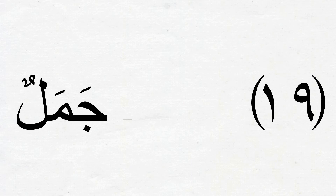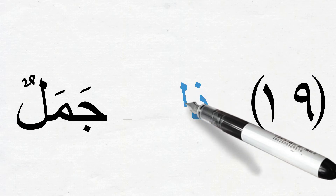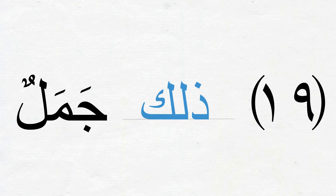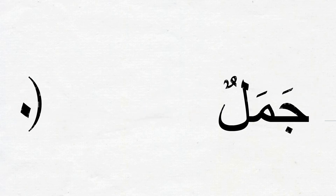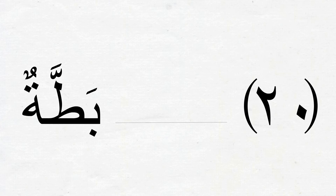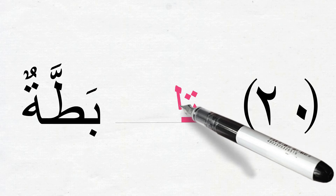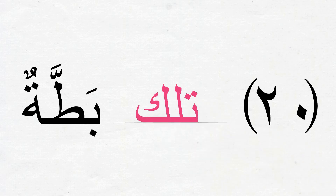Number 19: جَمَلٌ means 'a camel', مُذَكَّر, so we will say ذَٰلِكَ جَمَلٌ — that is a camel. And finally, number 20: بَطَّةٌ means 'a duck'; بَطَّةٌ is مُؤَنَّث because of the تاء مربوطة, so we will use تِلْكَ — تِلْكَ بَطَّةٌ, that is a duck.